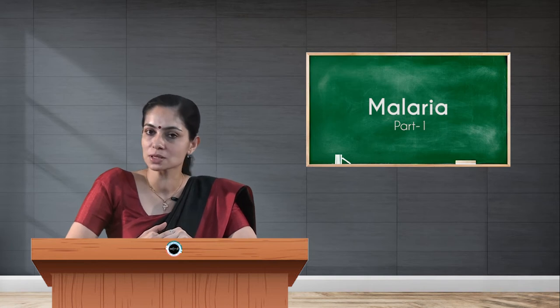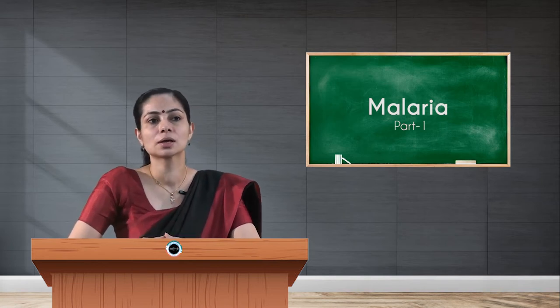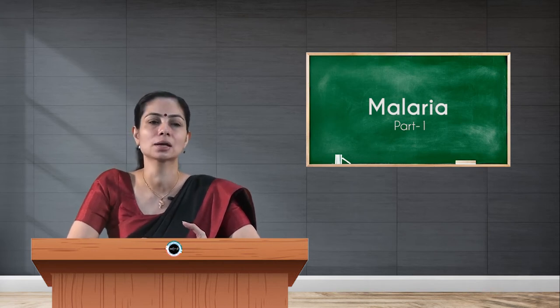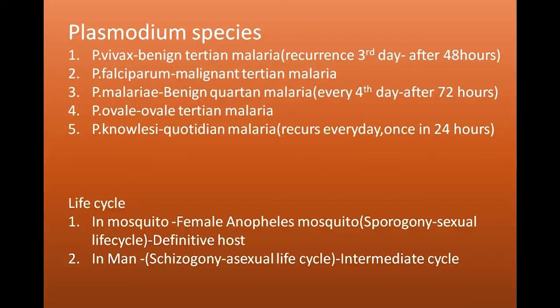Plasmodium malariae and Plasmodium ovale are less commonly seen species. Plasmodium malariae leads to benign quartan malaria, where symptoms occur every fourth day, that is after 72 hours. Plasmodium ovale leads to tertian malaria. Plasmodium knowlesi, not reported from our country, leads to recurrence every day, that is every 24 hours.